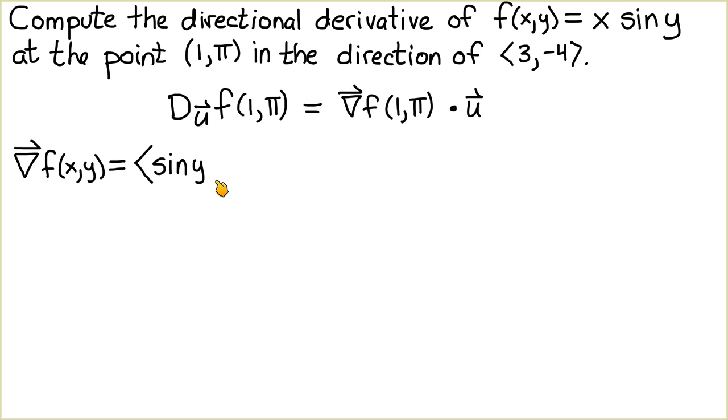And the second component of the vector is the partial derivative of f with respect to y, which would be x cos(y). Now we want to calculate the value of this gradient vector at the point (1,π).